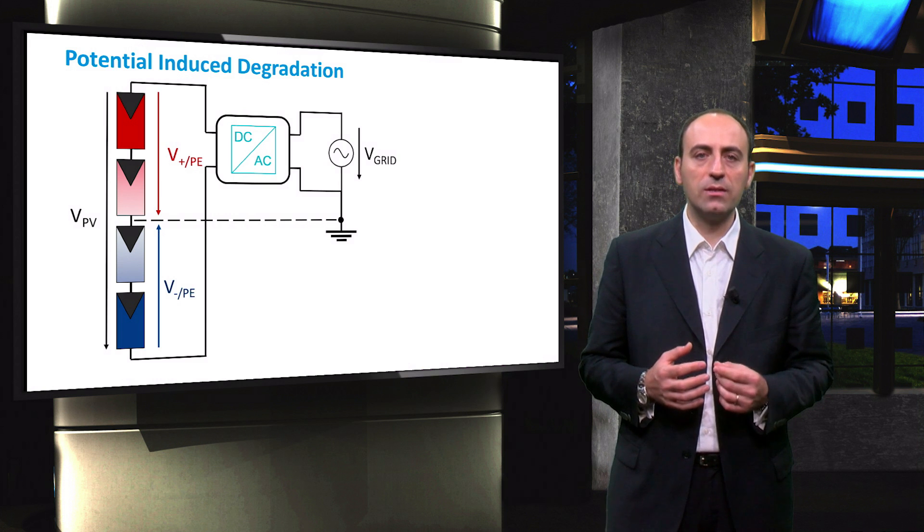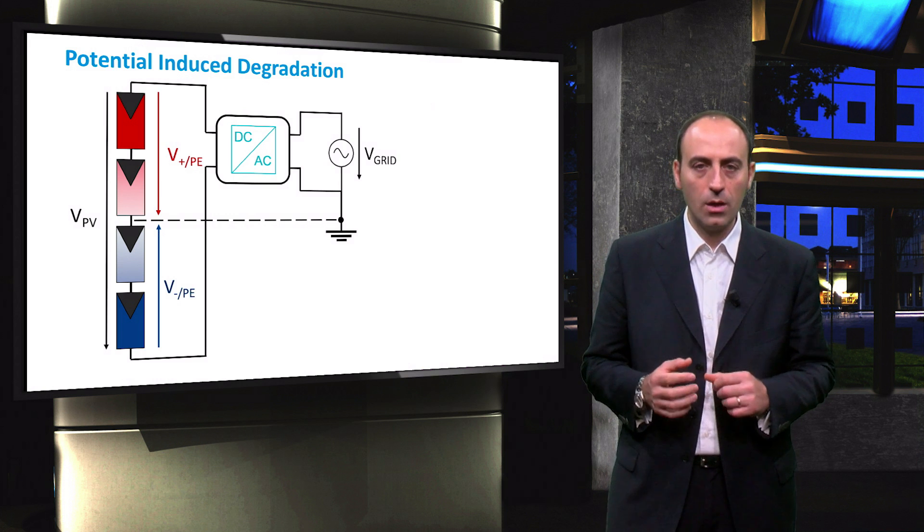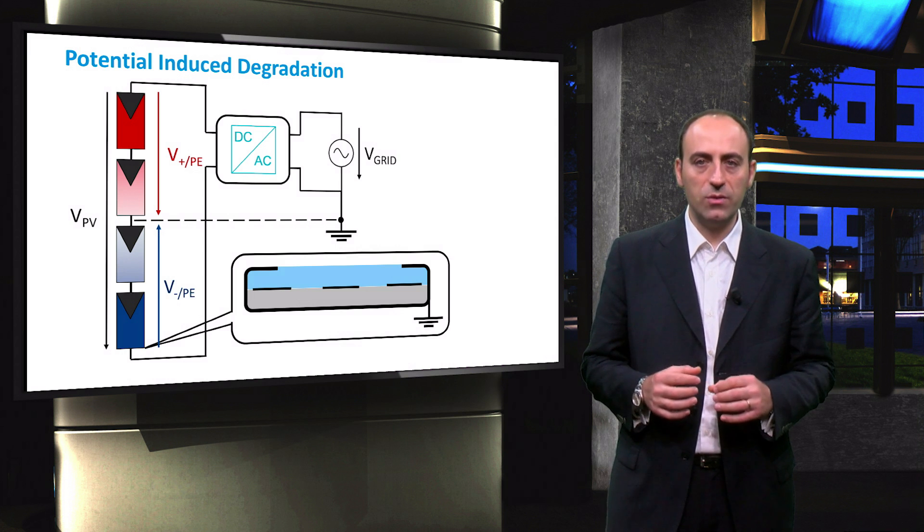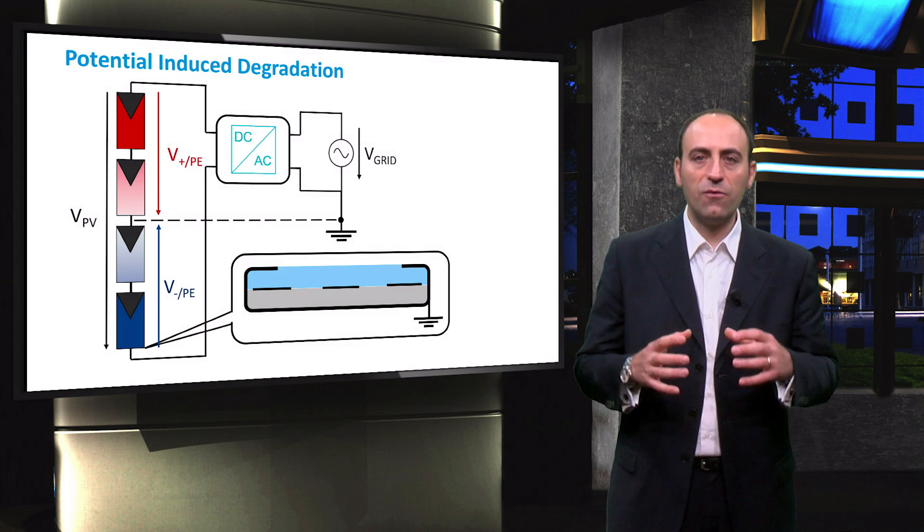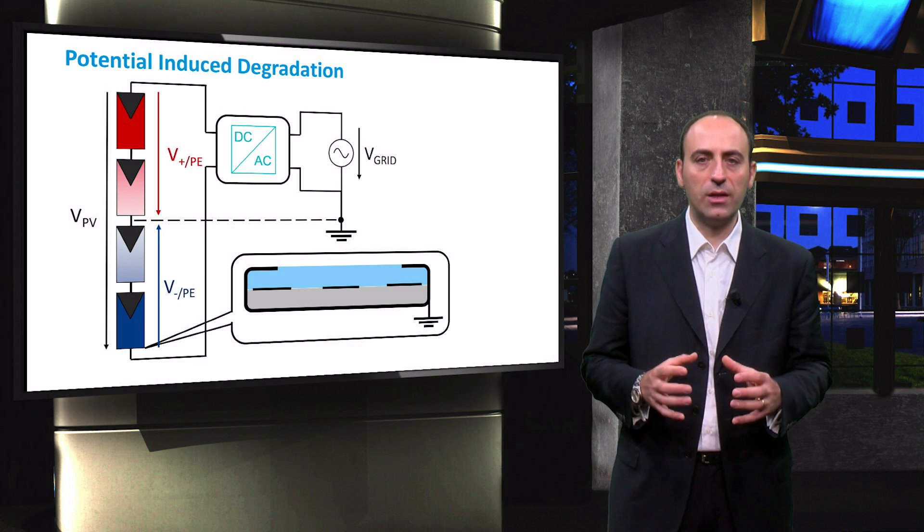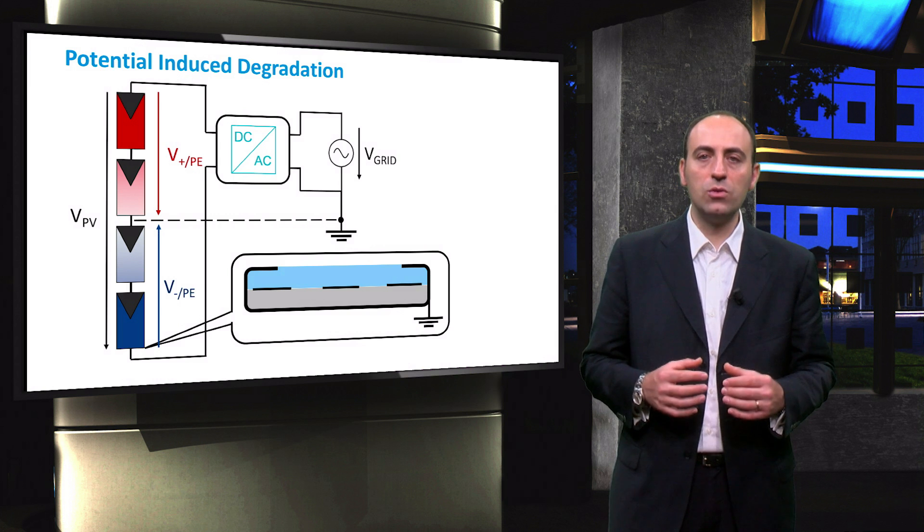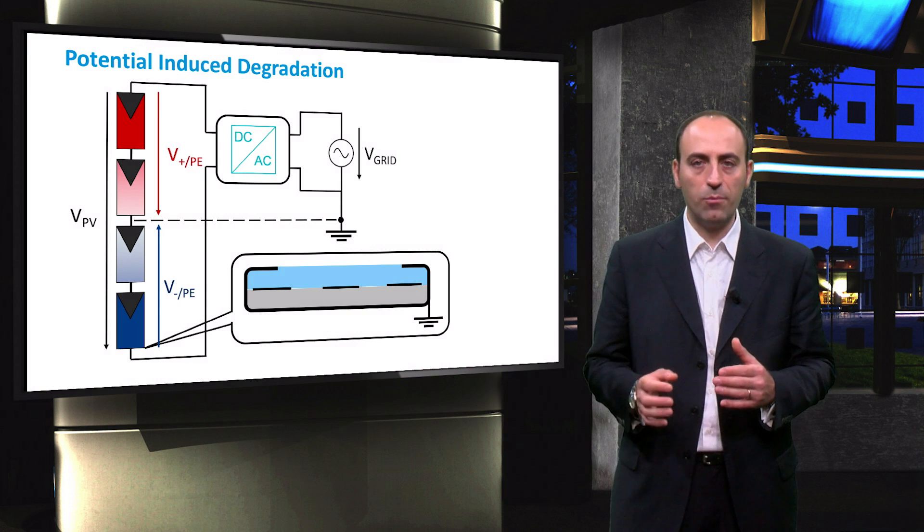depending on the length of the string and the type of the inverter used. The frame of the PV modules must be grounded for safety reasons. This means that the frame always has zero volt potential. Potential induced degradation occurs most commonly in the PV module that is closest to the negative pole.